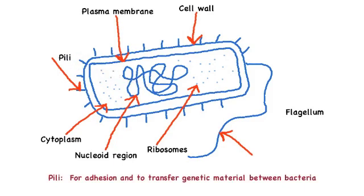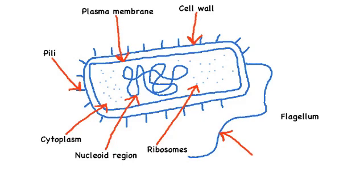Moving on to pili, these are small hair-like appendages around the outside of the cell that are used for adhesion and transfer of genetic material between bacteria.